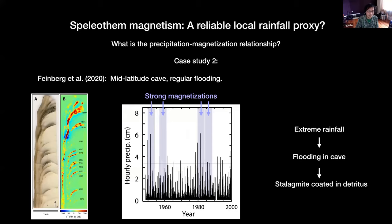A more recent paper from the same group studied a speleothem shown already this morning. Using this good microscope to measure the concentration of magnetic particles, they found that time periods with a lot of high extreme events — high rainfall events well above the normal rate — correspond to regions of strong magnetization. The idea is that flooding in this cave carried detrital particles that coated the stalagmite, leading to these enhanced layers. So in this case, magnetization corresponds to extreme rainfall.